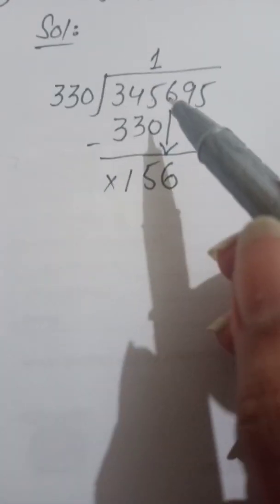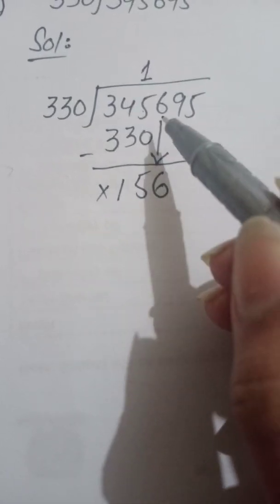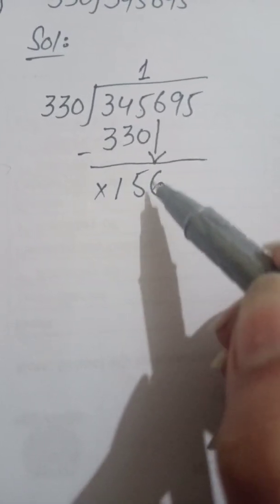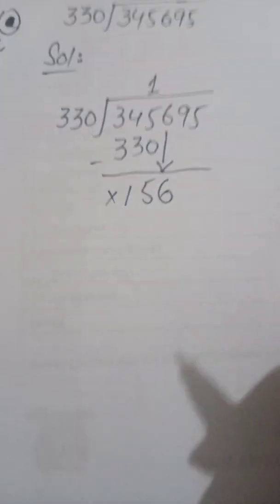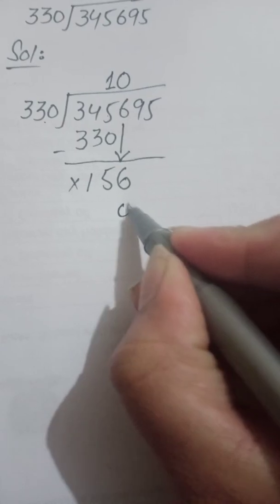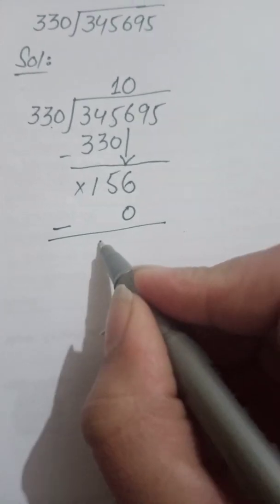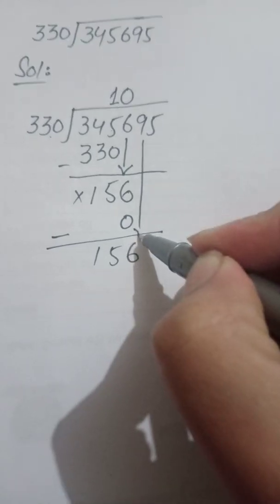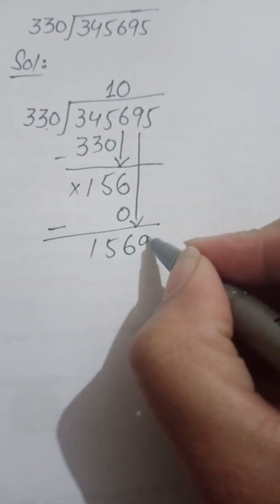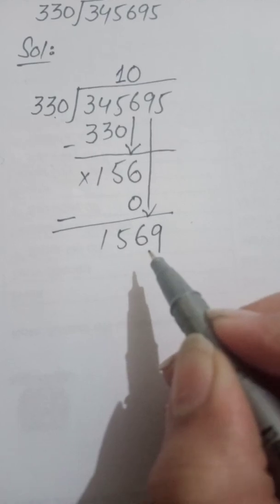When you have this type of question where the number is smaller than the divisor, you write 0 in the quotient, multiply 330 by 0, and then subtract. So we have 156 still. Now bring down the next digit, which is 9. Now it is 1,569.